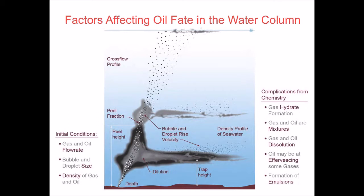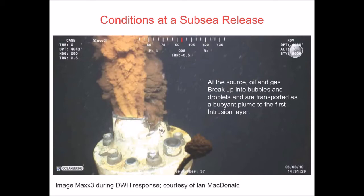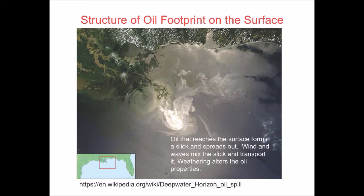Here's a picture of the Deepwater Horizon after they cut the riser and before installing the top hat. You can see oil and gas coming out together in a mixture, breaking up into small bubbles and droplets and forming a buoyant plume — a turbulent structure that is narrow and rising up through the water column. After the oil eventually reaches the free surface, ocean currents and winds move it around, forming a very complex structure. This is a satellite image of the Deepwater Horizon on a particular day, showing fine-scale structures of different thicknesses of oil slicks on the free surface.